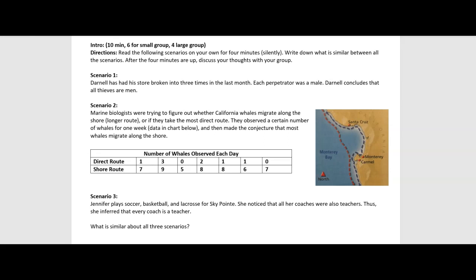Scenario two, marine biologists are trying to figure out whether California whales migrate along the shore, which is the longer route, or if they take the most direct route to their destination. And they're given a chart of whales each day that take the direct route versus take the shore route. The shore route is the longer route. And you can see that most whales are taking the shore route, which is actually the longer route.